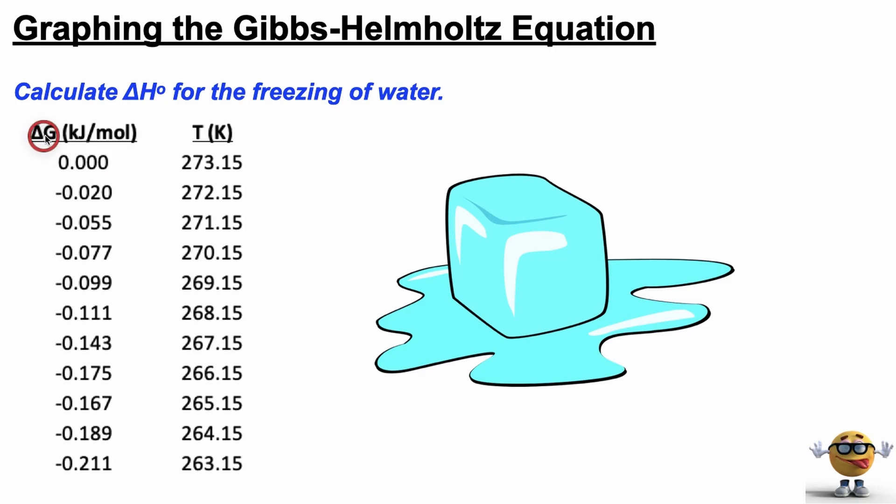This is the standard change in enthalpy for the freezing of water. And we're given some data, we're given change in Gibbs energies for various temperatures for the freezing of water. And if we see this first line here, this is zero degrees Celsius. At zero degrees Celsius, delta G is zero, which means water, liquid water and ice are in equilibrium. The two phases coexist at zero degrees Celsius. That's the melting point or the fusion point. But as the temperature gets colder, as we go below zero degrees Celsius, then water will spontaneously freeze into ice.